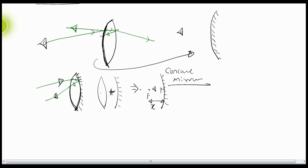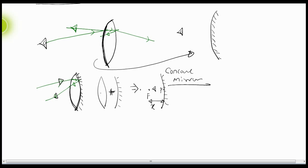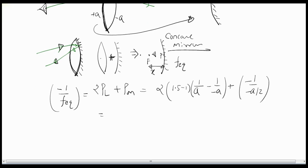How can we find the effective focal length? The radius of curvature and refractive index of the lens are given, so we can find its focal length. Using the power relation: minus 1 over f-equivalent equals 2 times the power of the lens plus the power of the mirror. Using the lens maker's formula: power of lens is (mu minus 1) times (1/R1 minus 1/R2). The first surface has positive radius of curvature A and the second has minus A. The power of the mirror is minus 1 over f-mirror, where f-mirror equals minus A over 2.